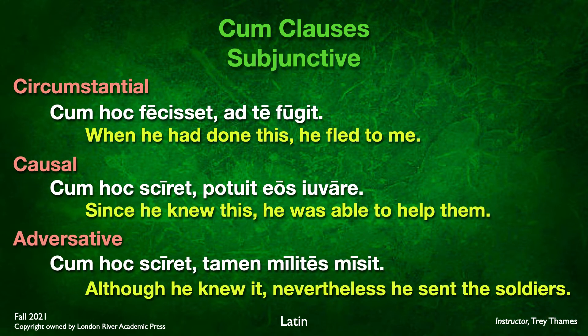And finally, the adversative cum clause: cum hoc sciret, tamen milites misit. Again, sciret is imperfect subjunctive. Cum here we translate as 'although.' We see tamen in the main clause — that's an indicator of a cum adversative clause. Although he knew it, nevertheless he sent the soldiers. So these are examples of all three subjunctive cum clause types: circumstantial, causal, and adversative.